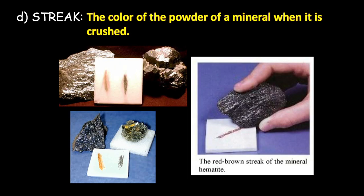That brings us to streak. A streak is the color of a mineral when you powder it. When we test minerals, we use white plates and drag the mineral across the plate — that's the mineral's powder. It's like taking a pencil and writing across paper: the pencil leaves behind a streak. Pencils are made of graphite, and graphite is a mineral — that's what's inside your pencil.